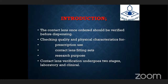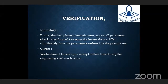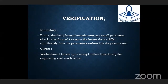Checking quality and physical characteristics is mainly for prescription use, contact lens fitting sets, and associated results. Contact lens verification undergoes two stages: laboratory and clinical. In the laboratory, during the final phase of manufacture, an overall parameter check is performed to ensure the lens does not differ significantly from the parameters ordered by the practitioner.